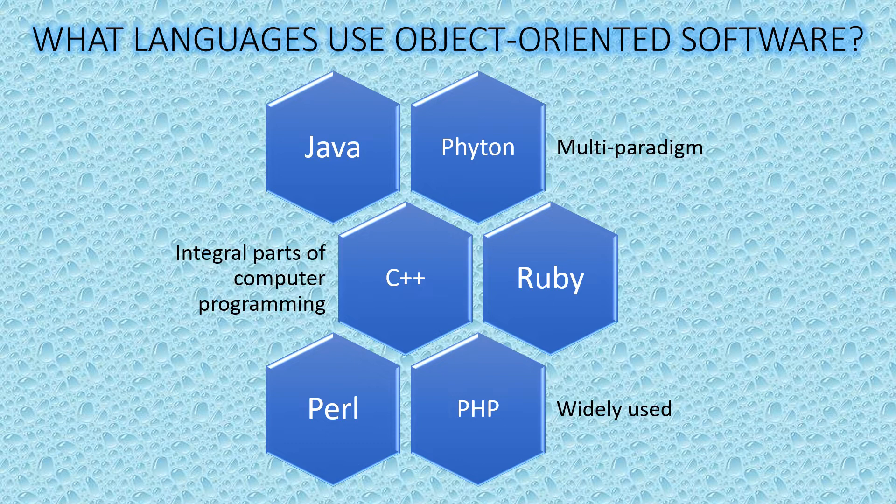Many of these languages, such as Python and Java, are multi-paradigm programming, meaning they support object-oriented coding within each language while combining it with procedural programming to build web applications and security systems. All of these languages are integral parts of computer programming, and much of software development relies on object-oriented software.